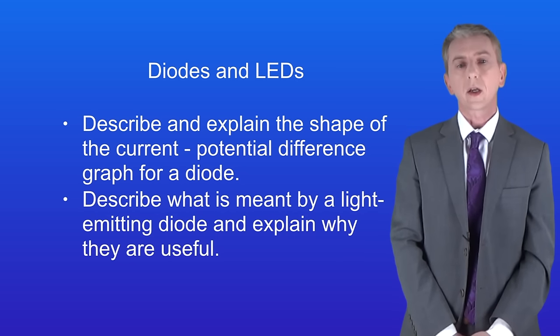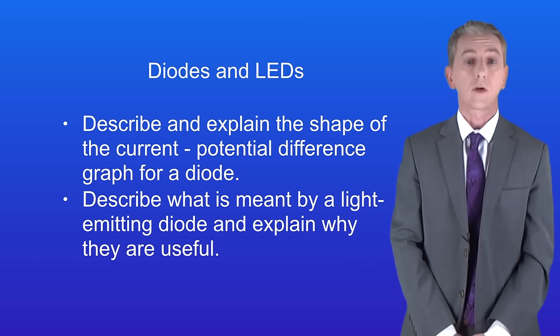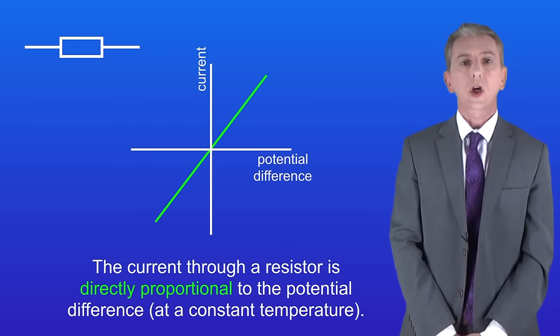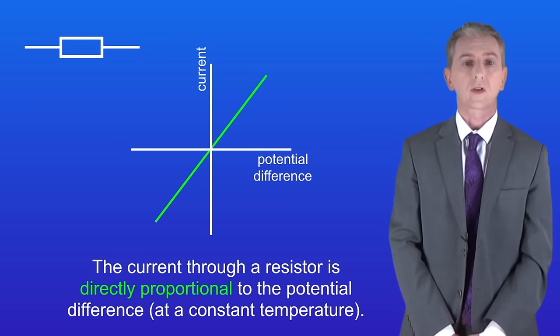In the last two videos we've been looking at the current potential difference graphs for a resistor and for a filament lamp. Remember that the current through a resistor is directly proportional to the potential difference, as long as the temperature is constant.